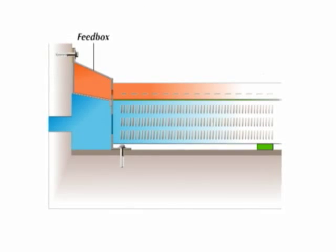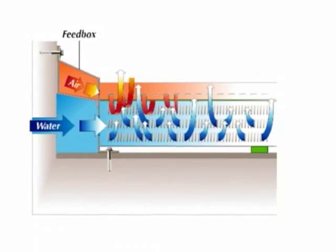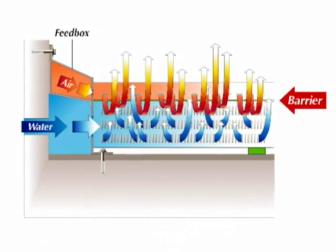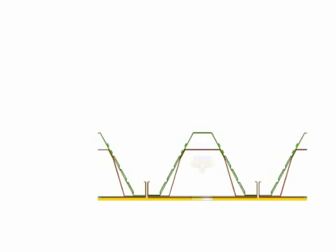To achieve superior simultaneous air and water wash, wave action between the air water interface is prevented by a barrier that separates the air and water channels in both the feed box and the laterals.